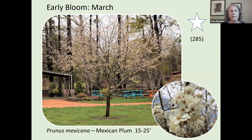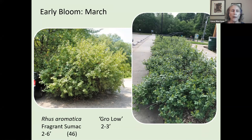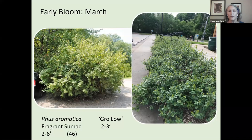Fragrant sumac is not used very often as a landscaping shrub, but it is a large shrub that supports 46 different kinds of butterflies and moths. Deer generally don't go for plants with a strong aroma when you crush the leaves, so they tend to leave this one alone. The cultivar on the right called Grolo is native to the Great Lakes region.